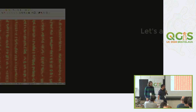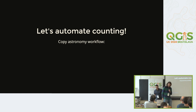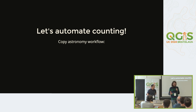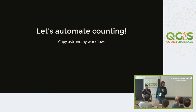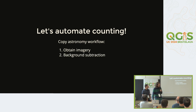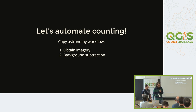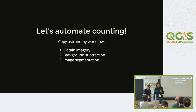Now comes the astronomy part, because this problem — that we have a raster and we have stuff on the raster which we want to count — this has been solved, or good progress was made on this topic by astronomy people. The general workflow is the same: we have a drone, we get the images, we deal with the background — just as in the agriculture case we don't care about some stuff on the image but we care about some other stuff. We identify the sources, and then we separate the sources so we can actually count them.